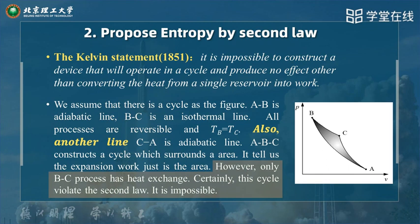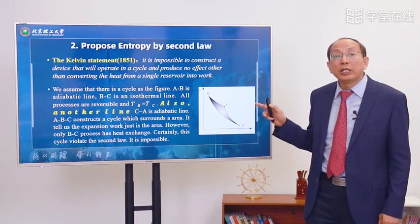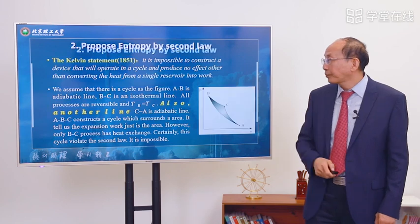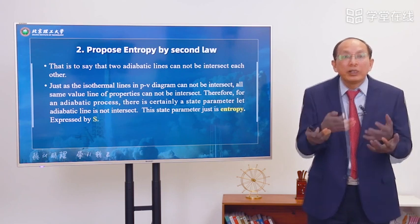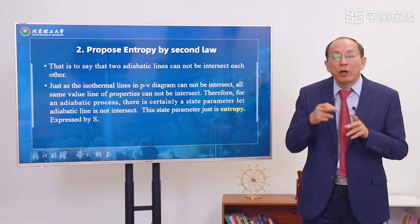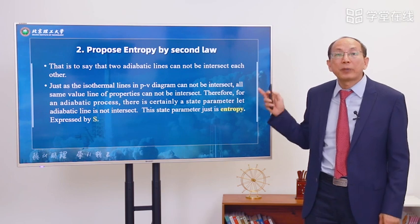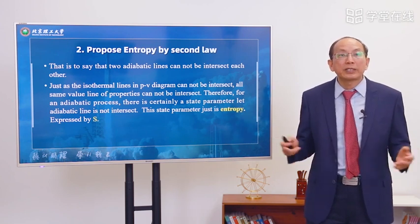The second law tells us we cannot obtain work from a single reservoir with no other effect. Therefore, this cycle is certainly impossible. That is to say, two adiabatic lines cannot intersect each other, because if they did we could construct exactly such an impossible cycle as shown in the previous picture.